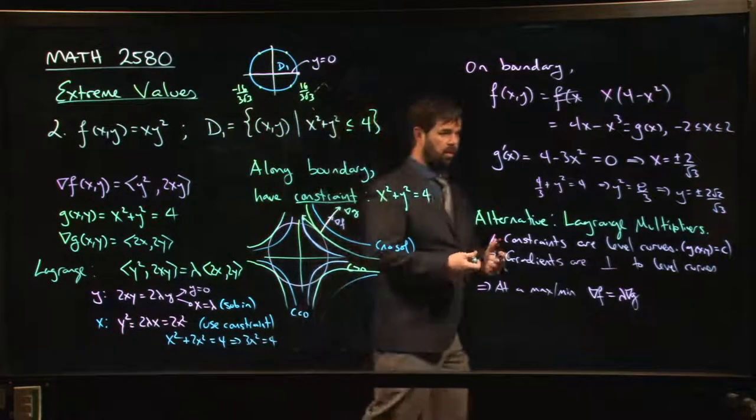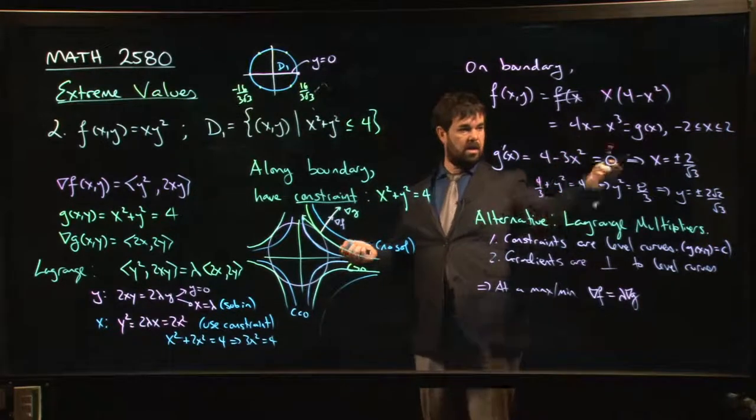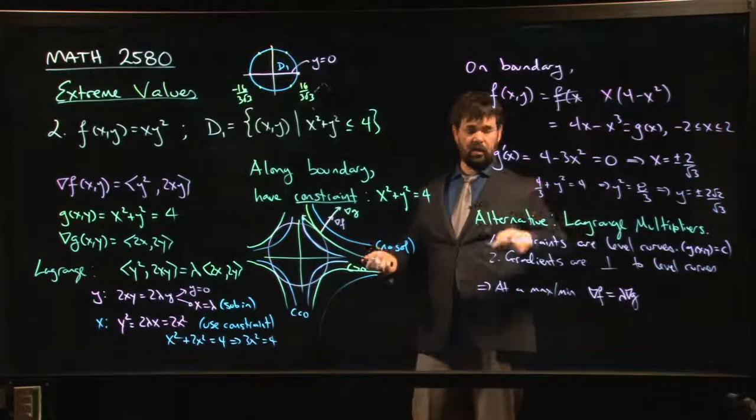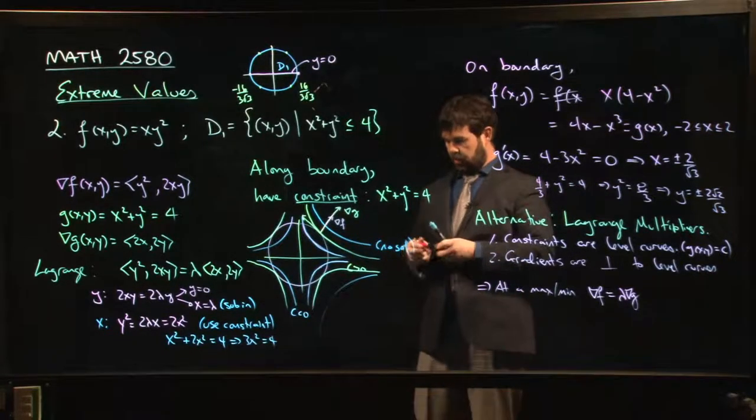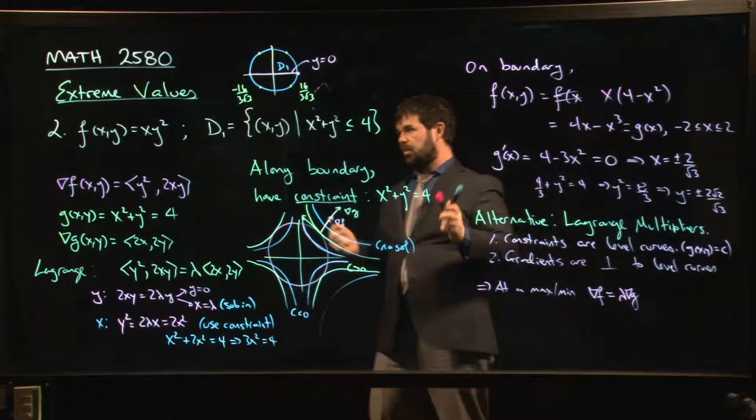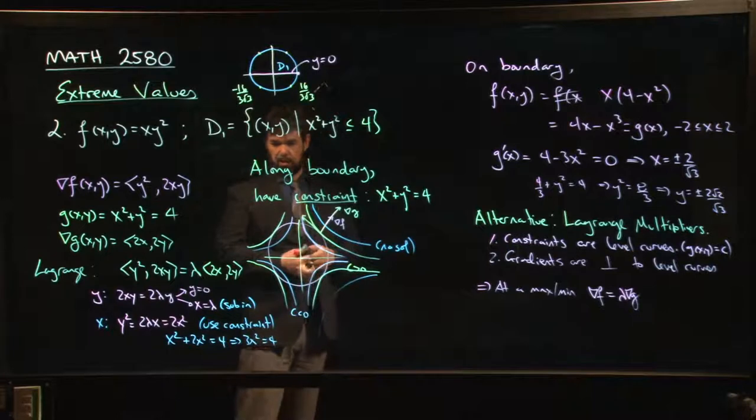x squared is 4 over 3. I can solve for x. Once I have x, I can solve for y. Once again, I get my critical points. So several ways that you can solve this particular optimization problem.